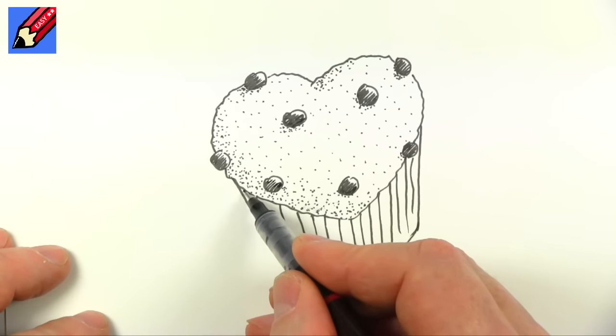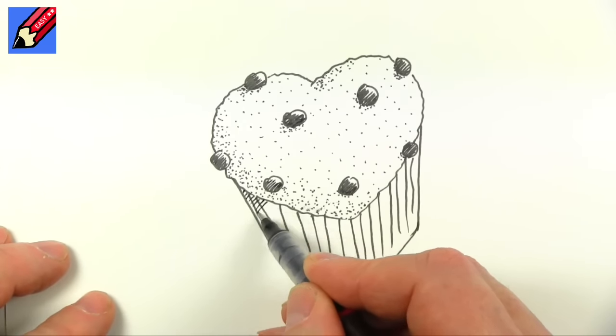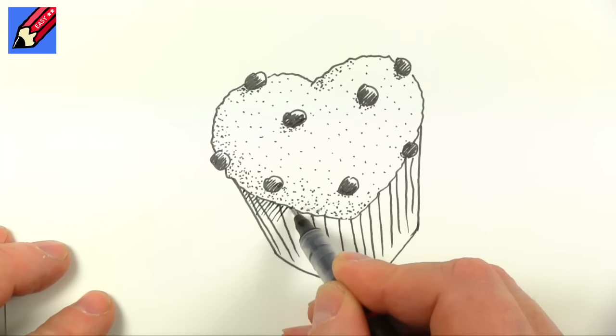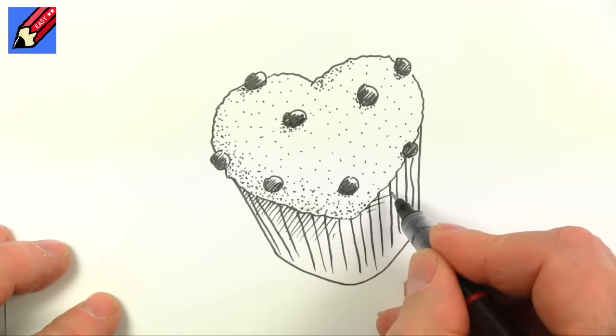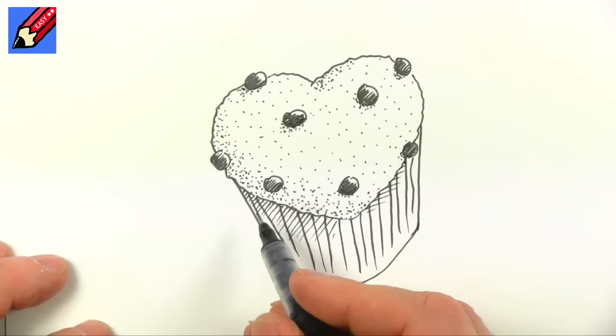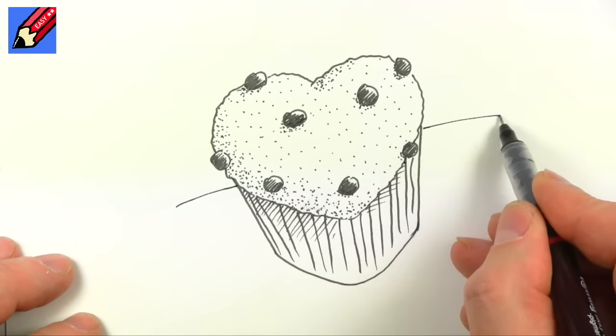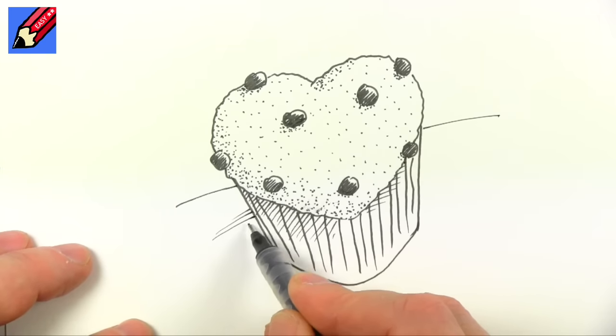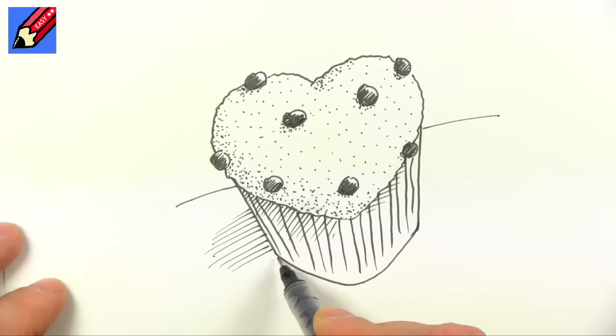Then we're probably going to get a bit of shadow underneath here, so I'm just going to draw that shadow in down there. We maybe have a bit of shadow down there, and then we can put it on the table like that and draw some shadow all the way around it.